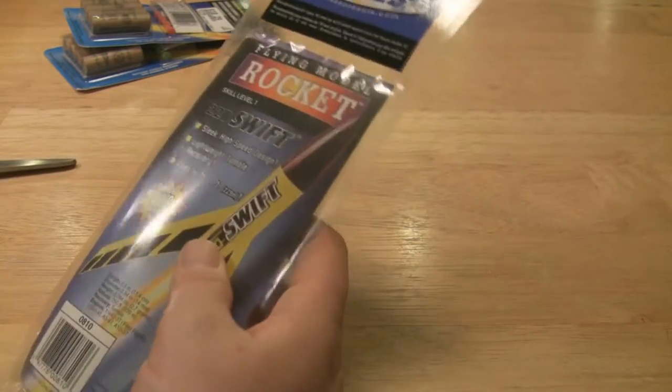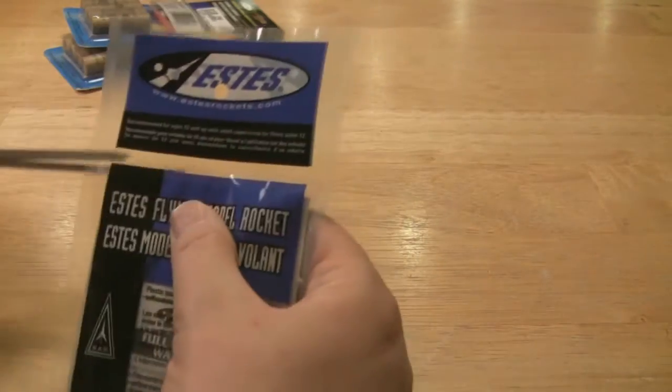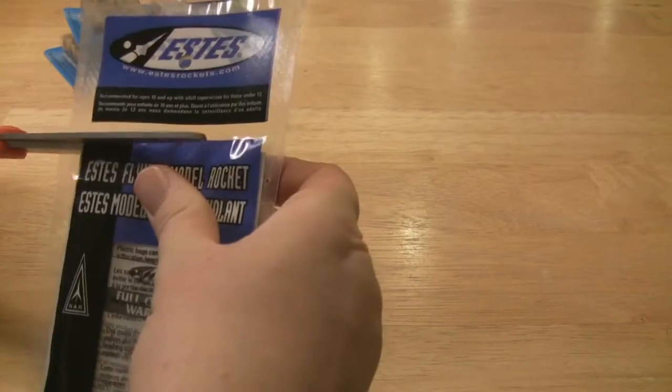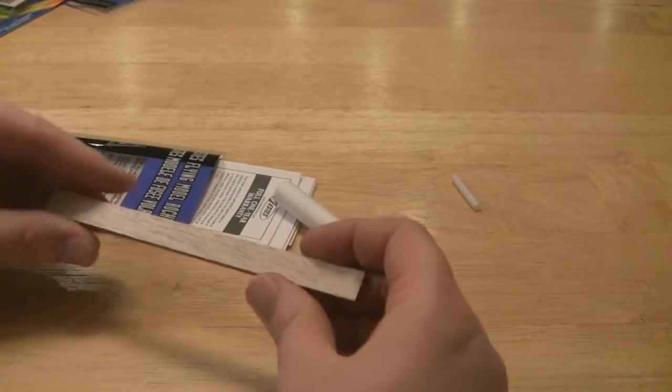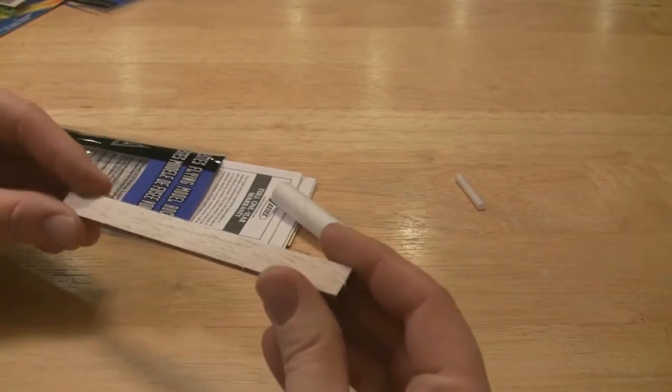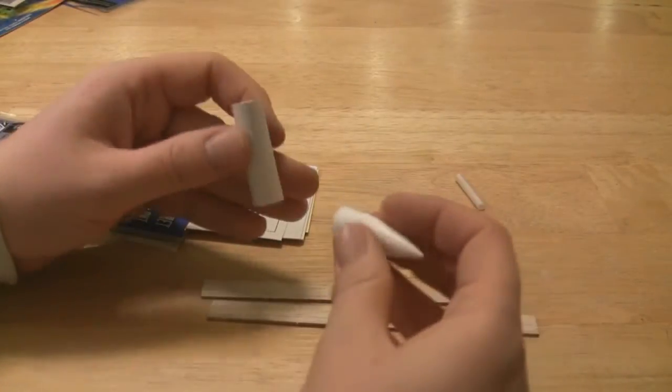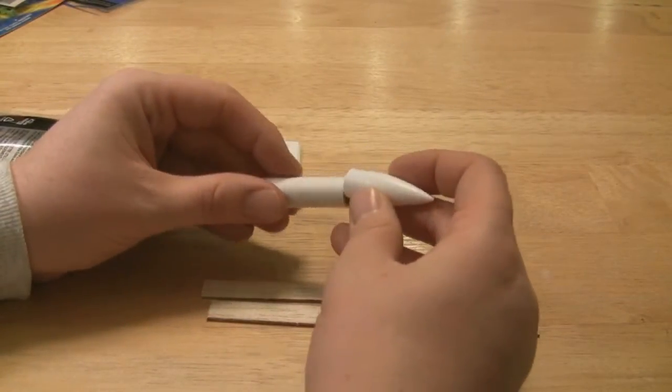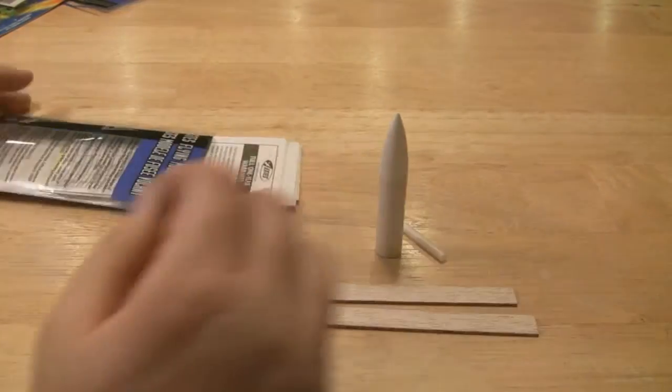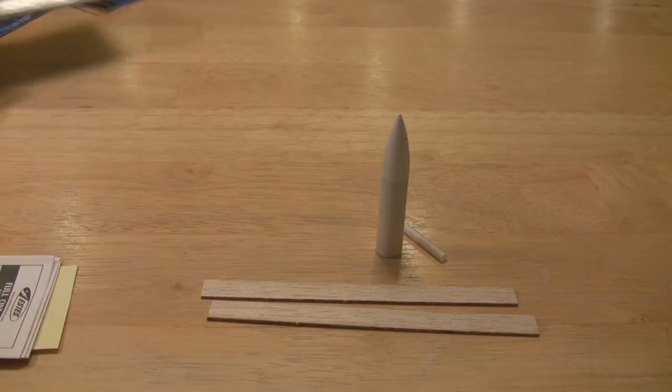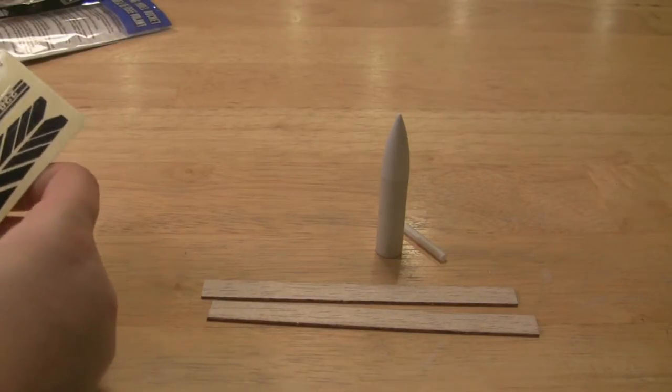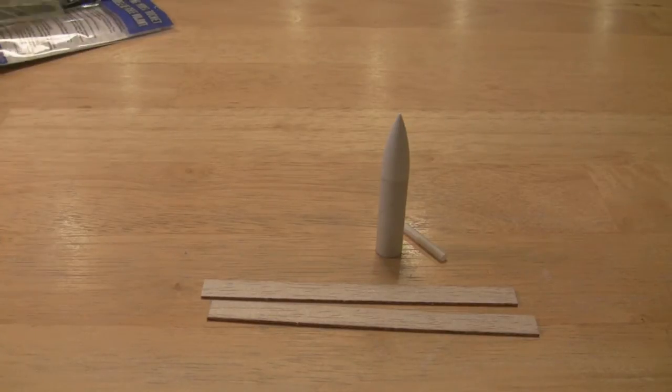This really is a teeny tiny rocket. Body tube and a launch lug. So this is almost gonna be like sticking a couple of fins and a launch lug onto an engine and shooting it with just the engine.